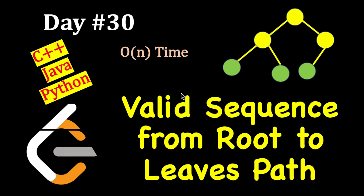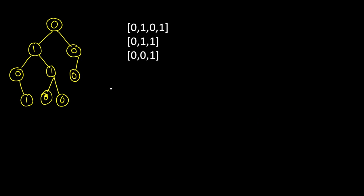Today is day 30 and the problem is to find, given a string, whether it is a valid sequence from root to leaf path. Let's take one example to make it clear. You are given a binary tree, which will always have just two children: left and right.